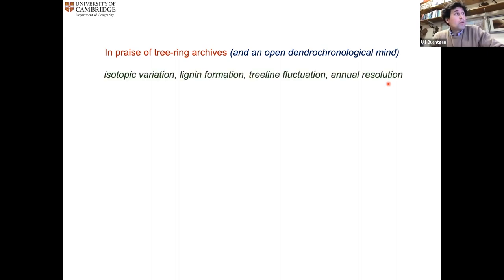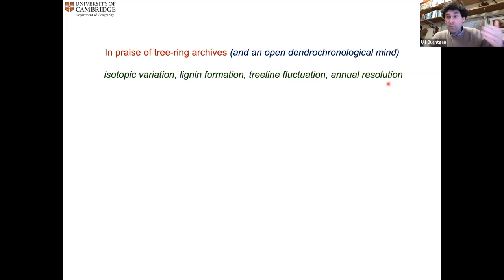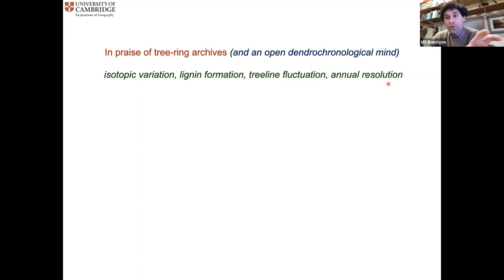More specifically, I will talk about four ongoing research frontiers where my group and colleagues are engaged, trying to find new answers and improve the field: isotopic variation, lignin formation, tree line fluctuation, and annual resolution. Before we go into these four topics, I want to start with some background about dendrochronology and tree ring research.